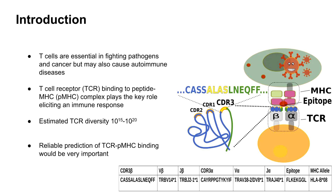T-cells are a part of the adaptive immune system, and they fight pathogens and cancer, but they may also cause autoimmune diseases. For an immune response, the T-cell receptors must bind to peptide MHC complexes. There is a vast diversity of TCRs and also a vast amount of different PMHCs. Because of this vast number of combinations, an experimental approach to determine these bindings is not feasible, and thus a reliable prediction of TCR-PMHC binding would be valuable.